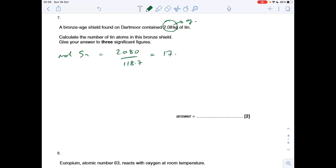So the number of atoms is moles times Avogadro's number, 6.02 times 10 to the 23. And that comes out at 1.05 times 10 to the 25, to three significant figures.